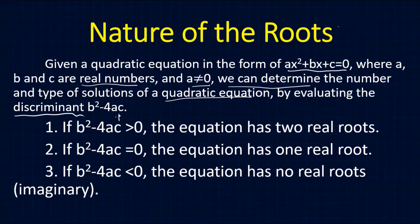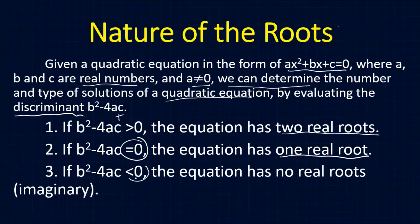To summarize: if our discriminant is positive, we expect two real roots. If the discriminant is exactly 0, we have one real root. And if the discriminant is less than 0 — meaning the computed discriminant is negative — we expect that the roots of the given quadratic equation are not real, or imaginary.